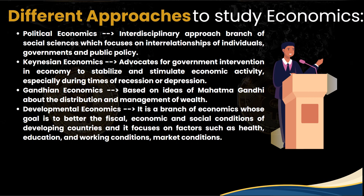Keynesian economics advocates for government intervention in the economy to stabilize and stimulate economic activity, particularly during recession or depression. The economy is not always positive or always negative in terms of growth; sometimes recession or depression occurs, and during that phase it is expected that government should intervene to create economic activity and put the economy back on track. For example, the Indian government announced the Atmanirbhar package of around 20 lakh crore during COVID-19 to bring the economy back on track.